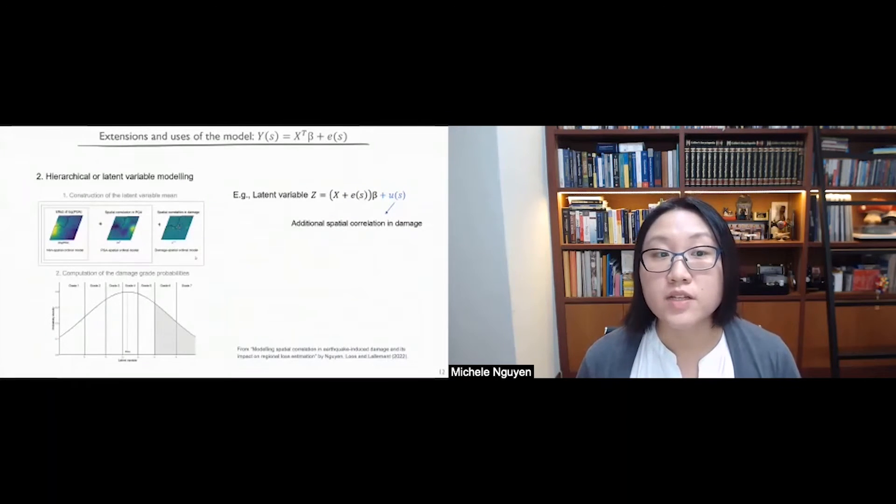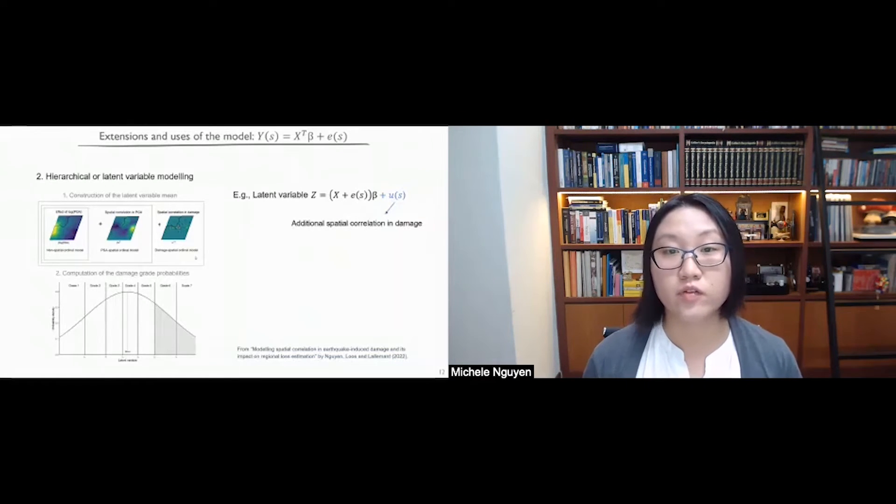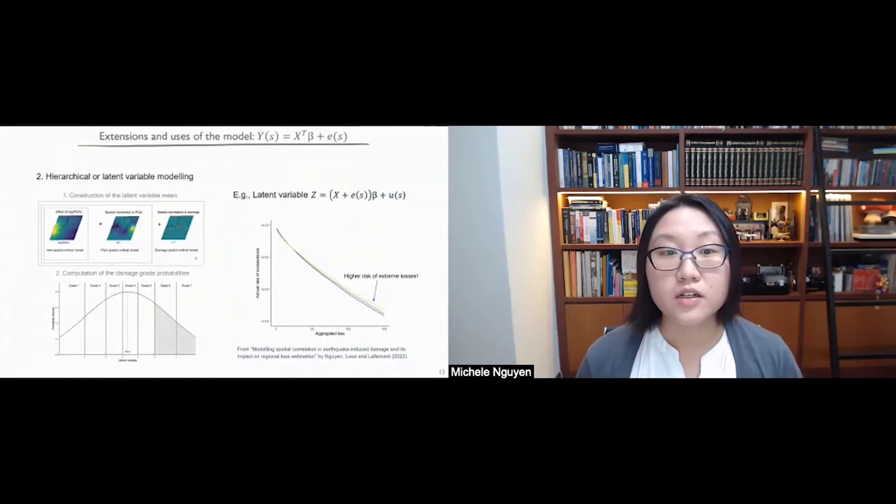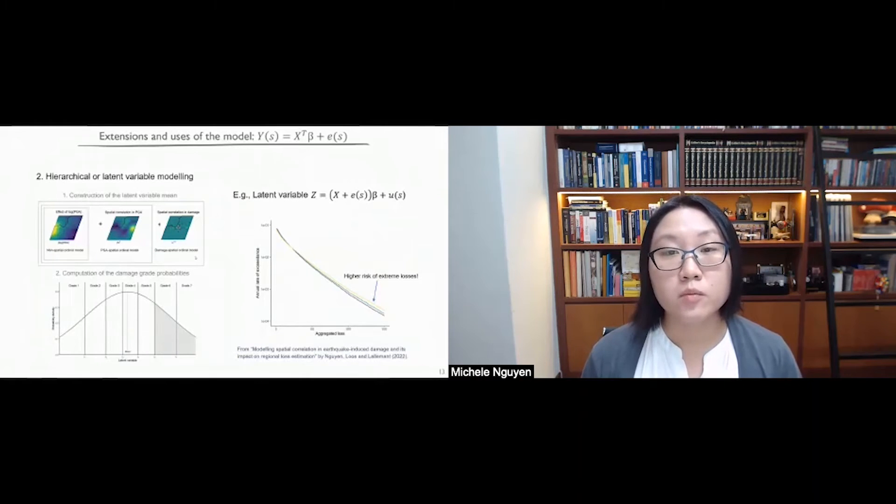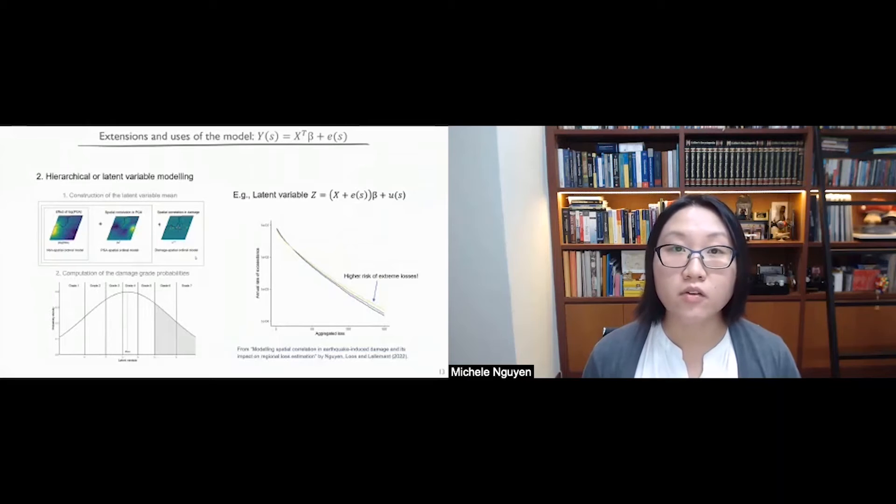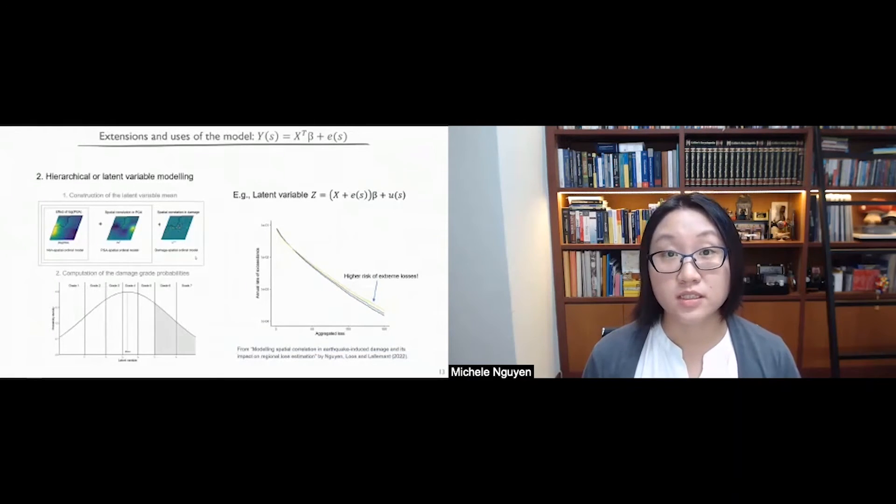And then based on the mean of this latent variable, we can compute probability of exceeding certain damage grades. So in the bottom left plot over here, we have, denoted by the vertical lines, cutoff values for the different damage grades. And the shaded area here represents the probability of exceeding damage grade 5, because we are looking at the area beyond the fifth cutoff point. So modeling spatial correlation in damage has implications for estimating the risk. And in particular, we show using simulations from earthquake models as well as this damage model, that when we account for more sources of spatial correlation, we see higher risk of more extreme portfolio losses, regional portfolio losses.